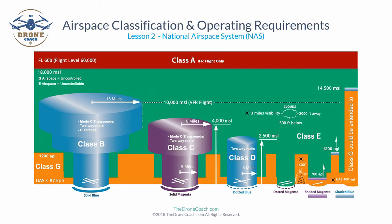The National Airspace System is comprised of Class A, B, C, D, E, and Class G airspace. Part 107 only requires knowledge of Classes B through G airspace. Incidentally, there is no Class F airspace in the United States. Classes B through G all fall under regulatory airspace, which is governed by the FAA.